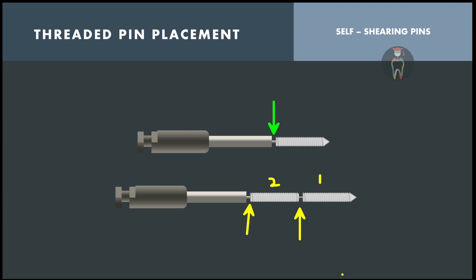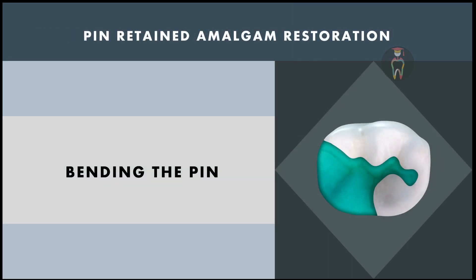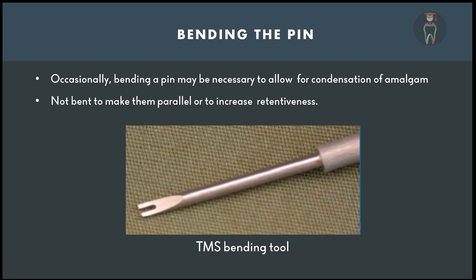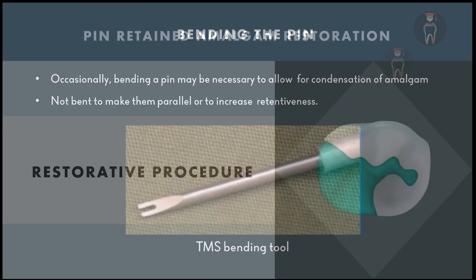After placing the pin, it may sometimes need to be bent for proper restoration — for instance, when it protrudes outside the tooth contour or when it makes proper amalgam compaction difficult. To bend the pin, a hand instrument should not be used; only the TMS (Threadmate System) bending tool should be used, which prevents cracks in the tooth structure and avoids pin breakage.